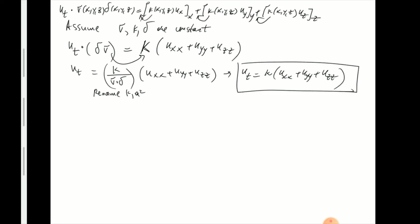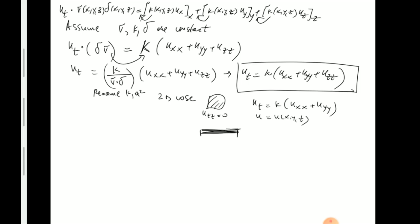The two-dimensional case follows immediately: if the object is a plate with no z-coordinate, then u_zz is zero, giving u_t equals k times (u_xx plus u_yy) with u depending on x, y, t. For the one-dimensional thin bar case, both u_yy and u_zz are zero, leaving only dependence on x and t — the familiar one-dimensional heat equation. In this class we'll solve PDEs in two variables, and we'll see later how to connect them with higher-dimensional problems.